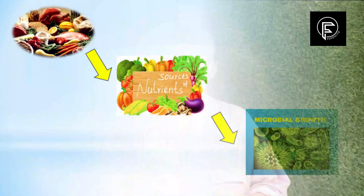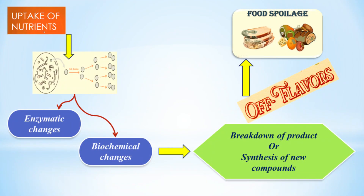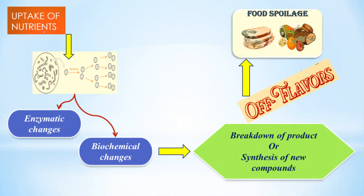As represented here, in most cases microorganisms utilize our food supply as a source of nutrients for their growth. As a result of this uptake of nutrients from our food, microorganisms multiply in number, thereby resulting in enzymatic changes and biochemical changes in our food product, leading to breakdown of certain products or synthesis of new compounds.